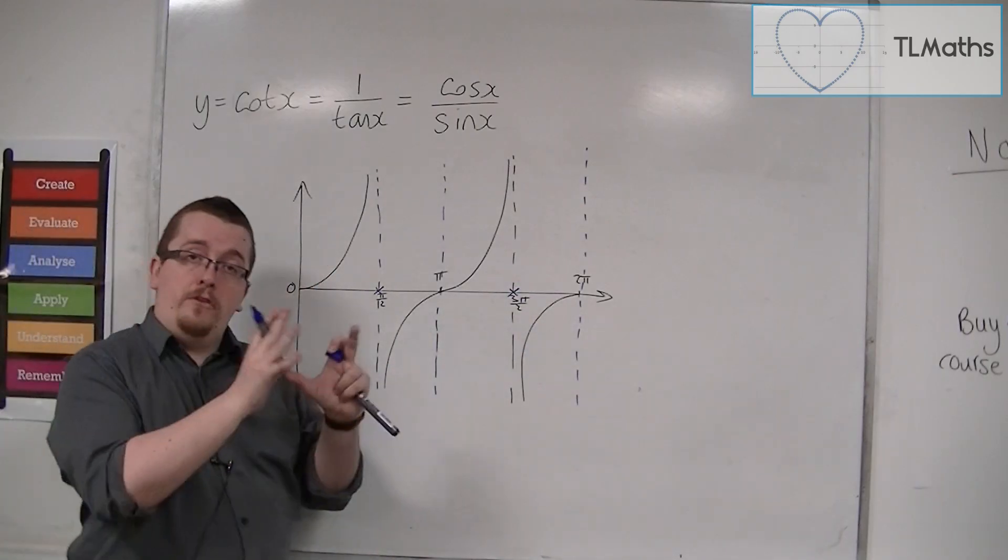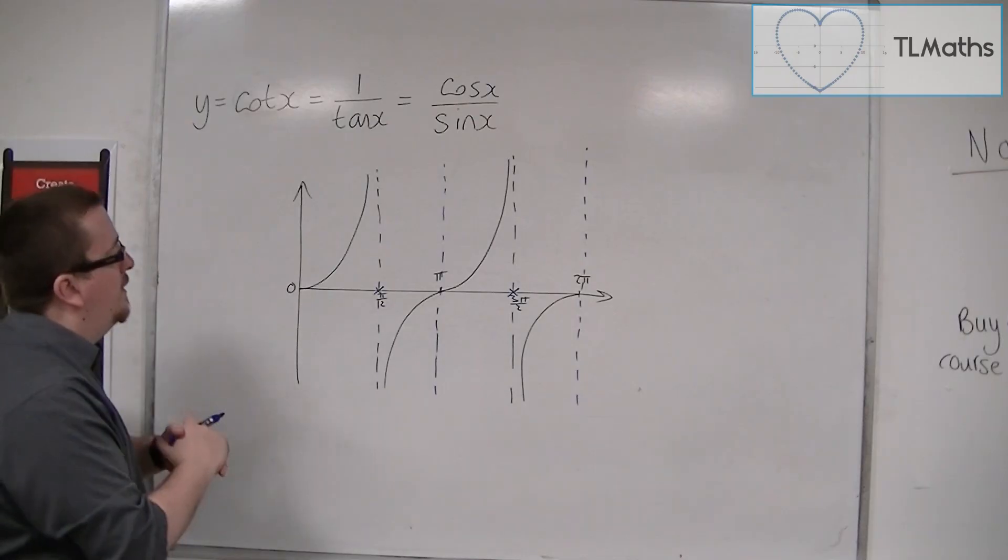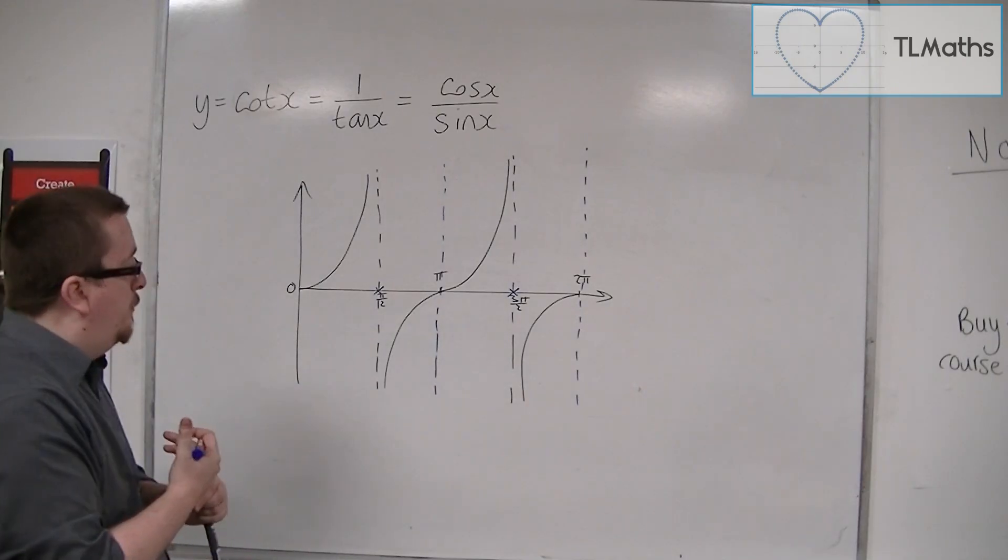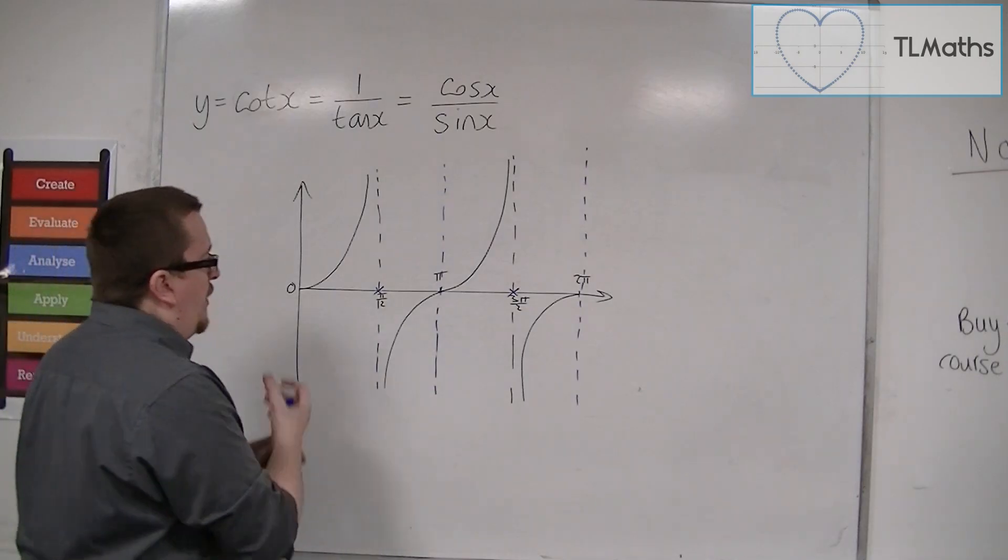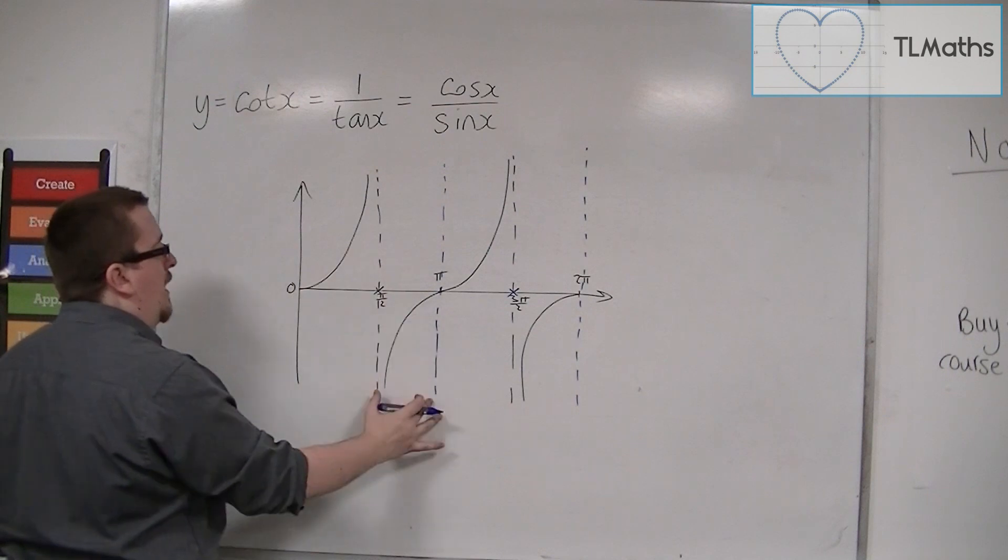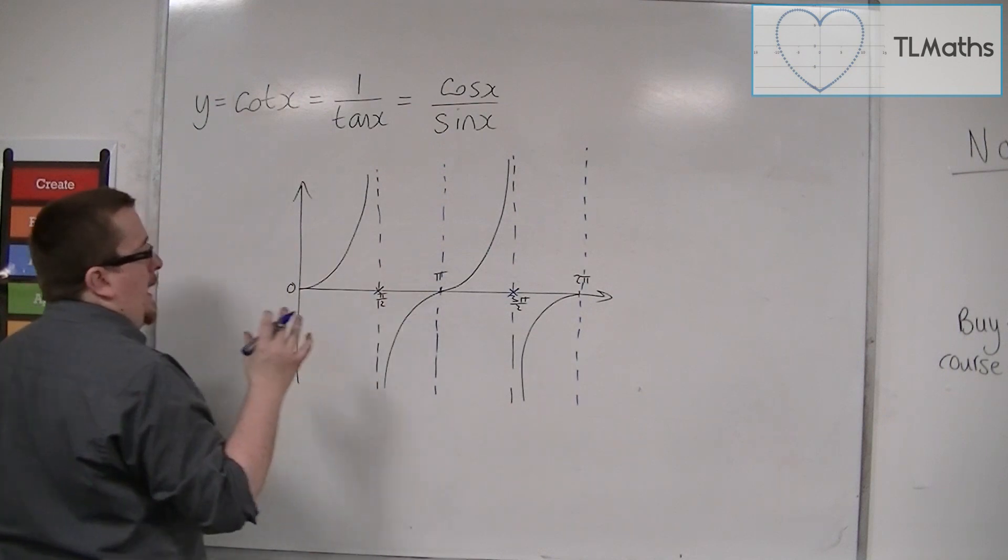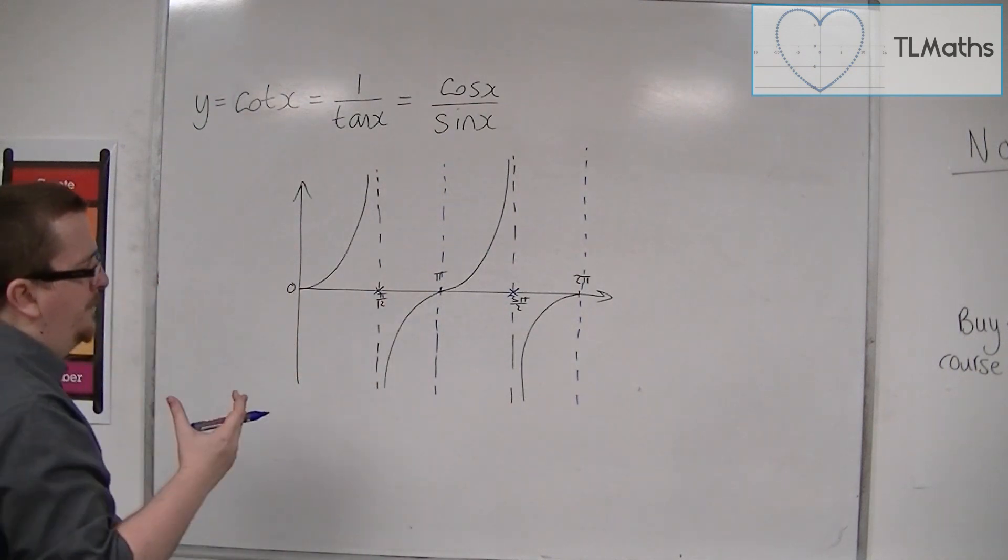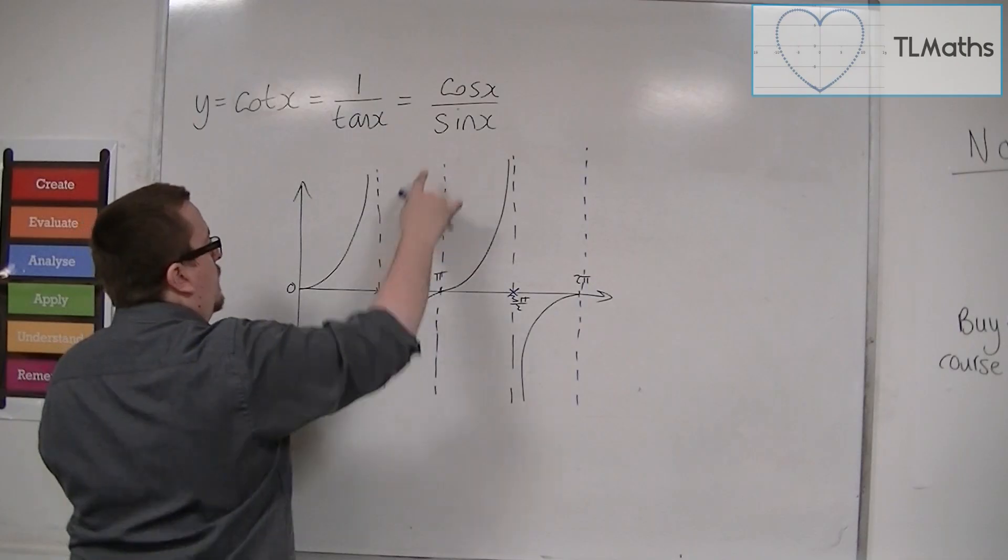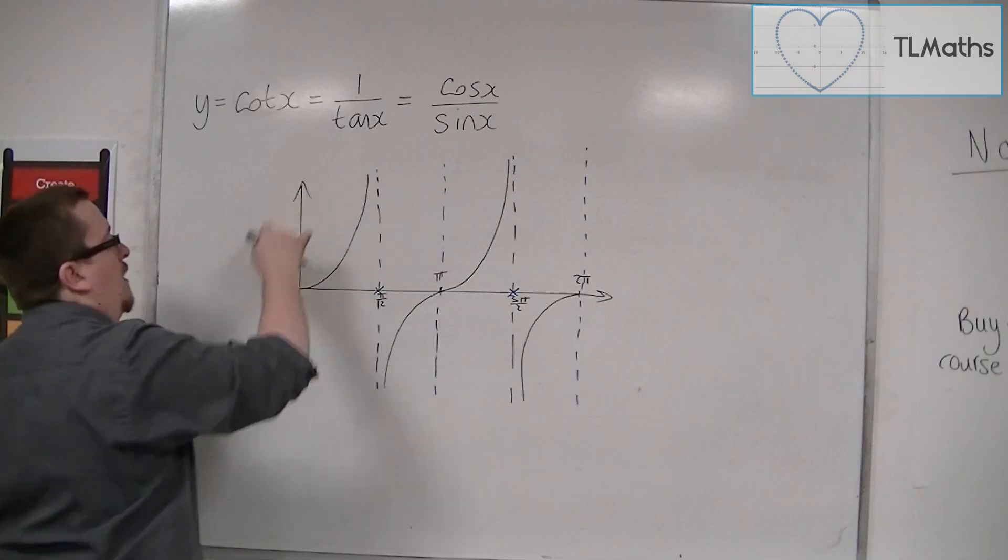That was very bad maths that I was going on there, but it will do to explain how the shape of the curve works. So in order to go through that point and to tend to these two asymptotes, the curve could either go through this way or it could go through that way.